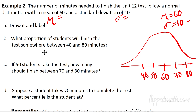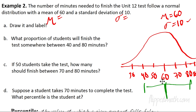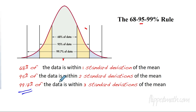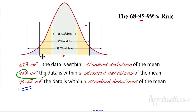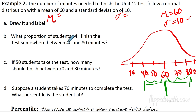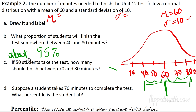Part B: What proportion of students will finish the test between 40 and 80? Looking at 40 to 80, that's 2 standard deviations on each side of mu. From our rule, within two standard deviations is 95% of the data. So the answer is about 95%. Most of our answers are going to be approximations.